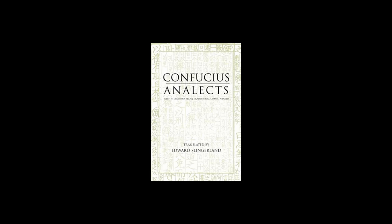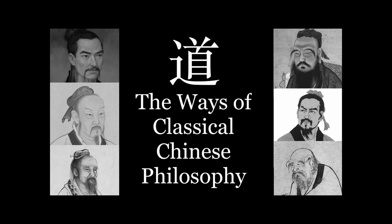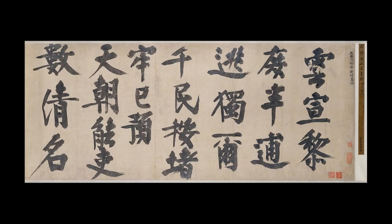Confucius's Analects, Lao Tzu's Dao De Jing, and Sun Tzu's Art of War were all written in classical Chinese, making it one of the most philosophically important languages. In my next video, I'll introduce a number of the greatest thinkers from classical Chinese philosophy. But information on the language from which the classics have been translated and studied is even more scarce than the rare philosophical study itself.